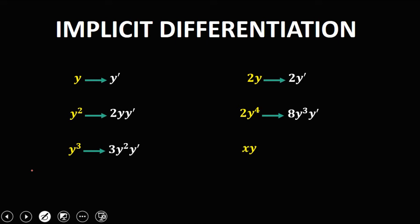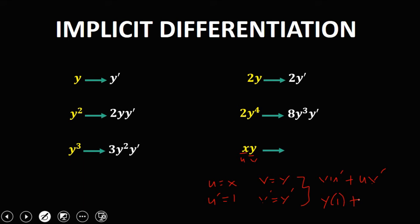For x times y, we use the product rule. Let u equal x and v equal y. The derivative of u is 1, and the derivative of v is y prime. Using the product rule formula — v times u prime plus u times v prime — we get y times 1 plus x times y prime. Therefore, the derivative of x·y is y plus x·y prime.